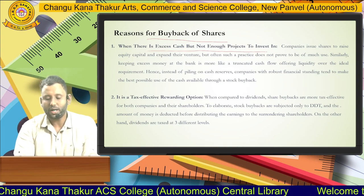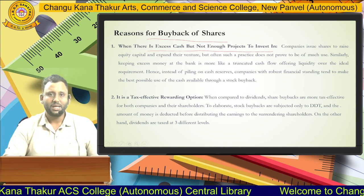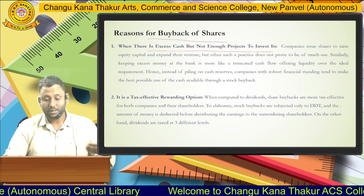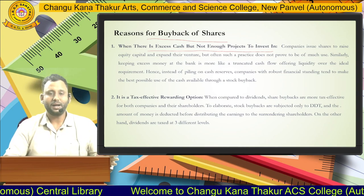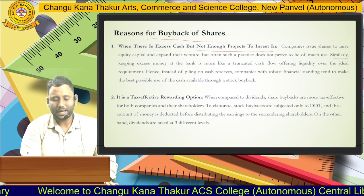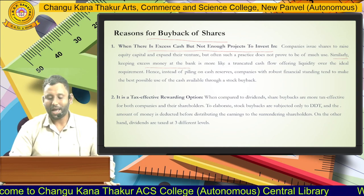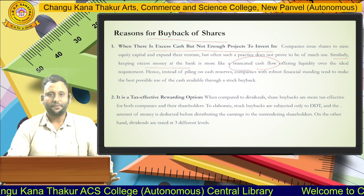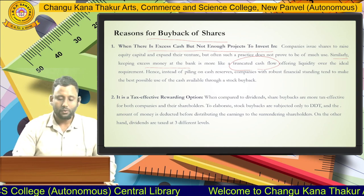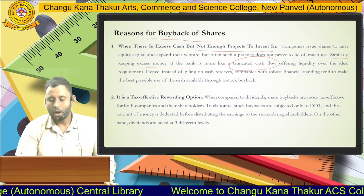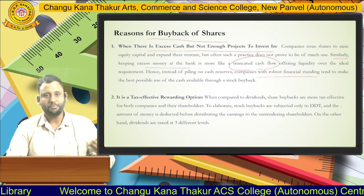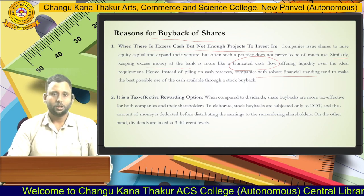First, when there is excess cash but not enough projects to invest in — meaning there is cash available with the company but they don't know how to invest it. There are not enough projects where they can invest that money. Keeping this excess money in the bank as stagnant cash flow gives no return. So what the company does is give that money to the general public by repurchasing their shares, resulting in less shareholding.